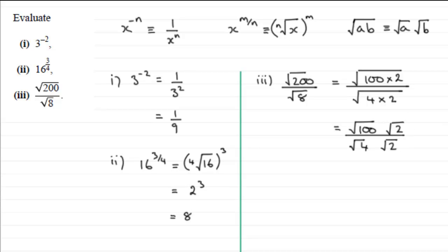And I can see now that because we've got one term on the top and one term on the bottom, they share a common factor of root 2, so they can cancel out.